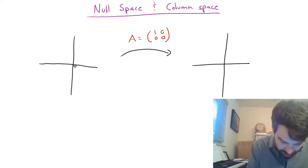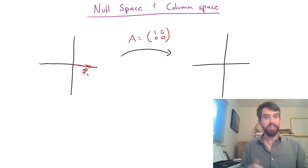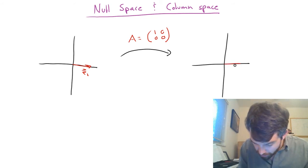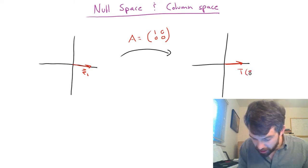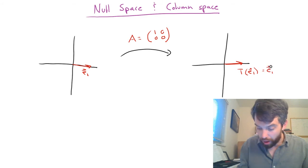If I take the vector E1, that's the vector 1, 0, then what happens here, multiply it in, it doesn't change at all. So I can put that down right over here and it does not change, so my transformation applied to E1 is just going to be exactly the same thing as the E1.